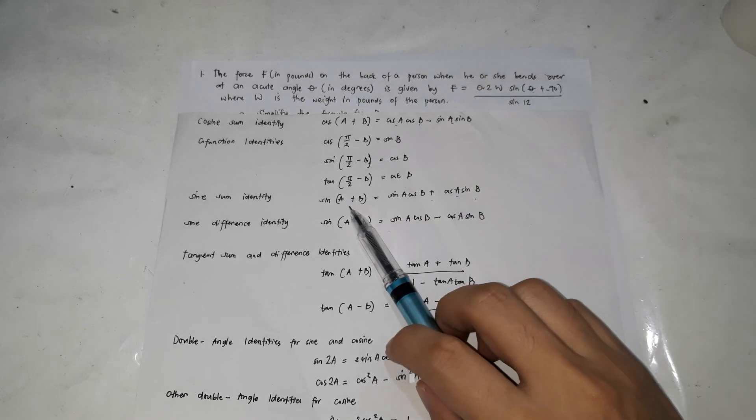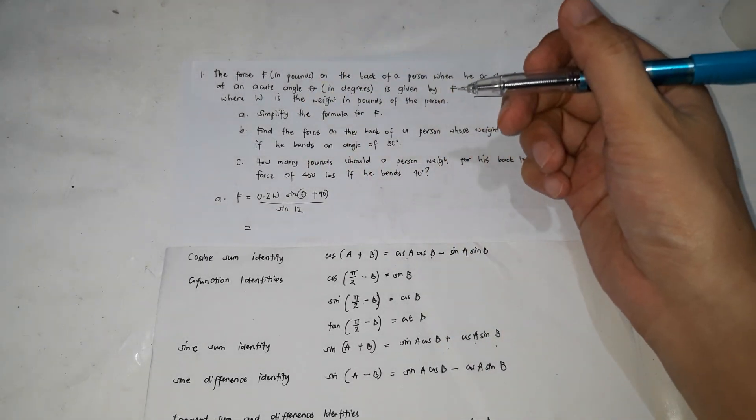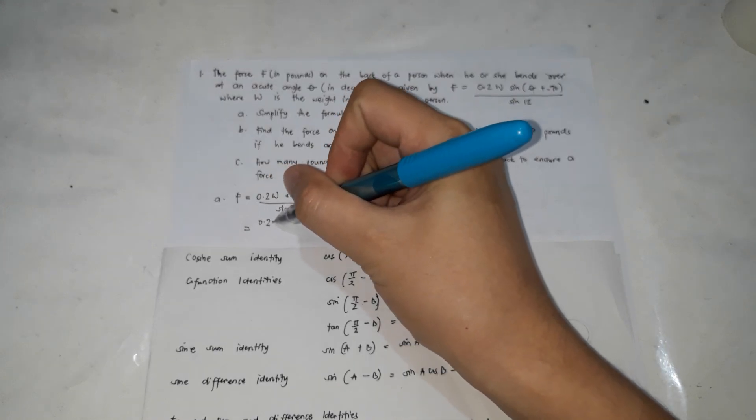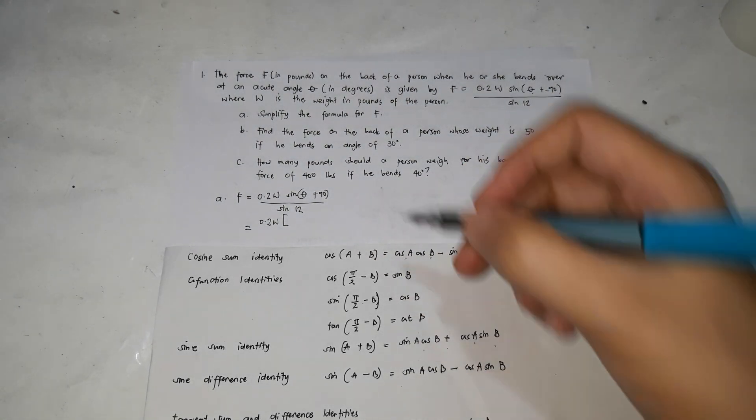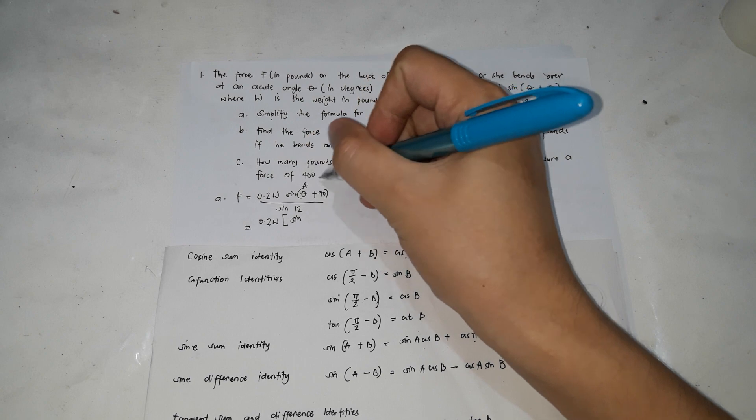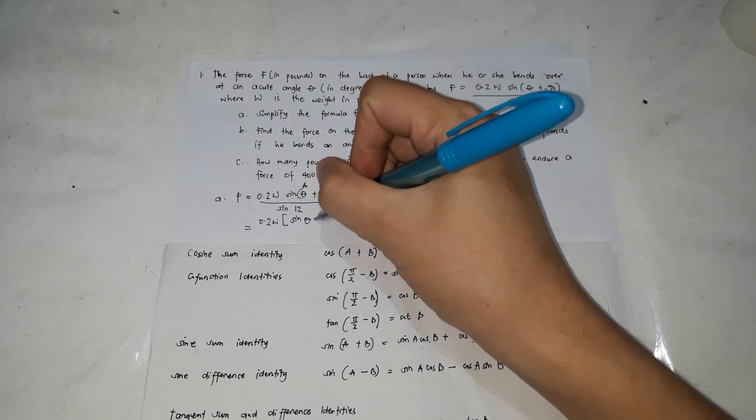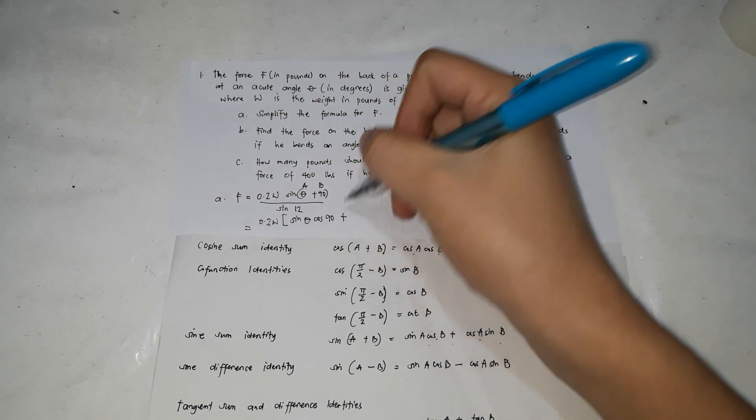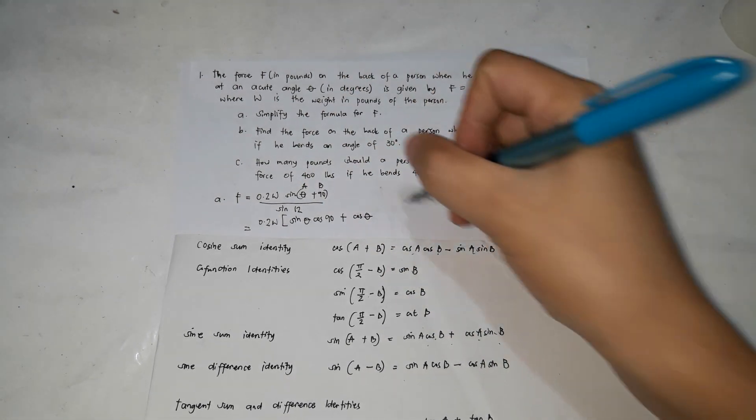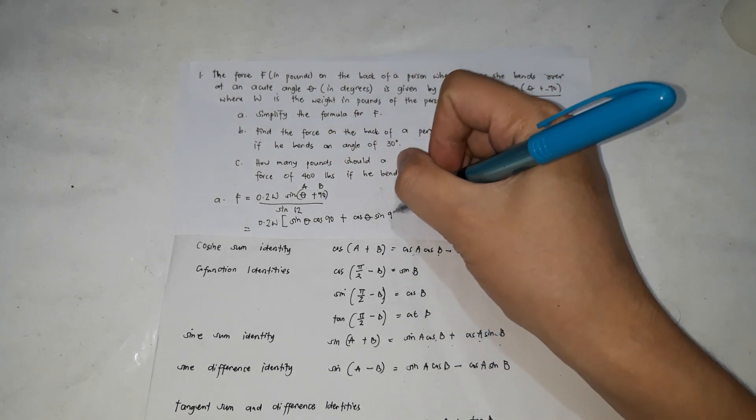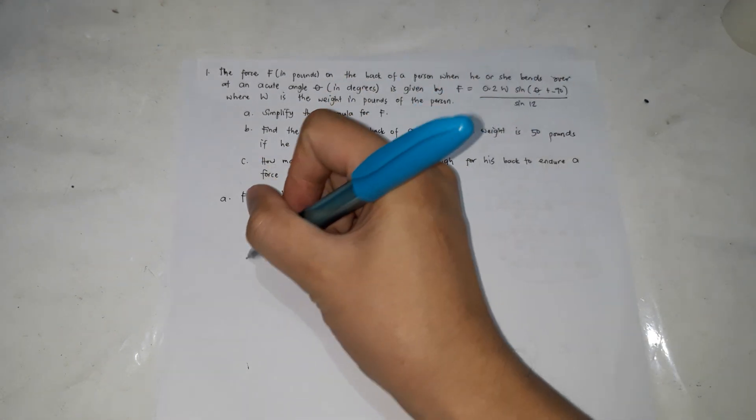We're going to use this one because this is plus. So sine A plus B. Copy first 0.2W. So sine(theta plus 90), to simplify this we're going to have sine theta cosine B, which is cosine 90, plus cosine A, which is cosine theta, times sine B, and B is 90. So over sine 12.